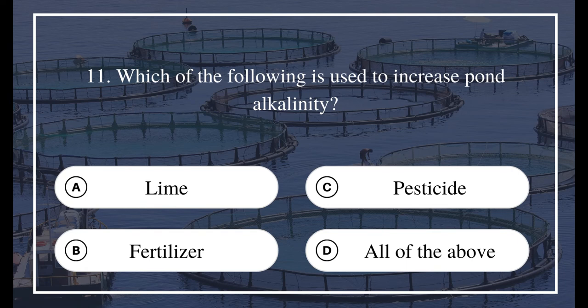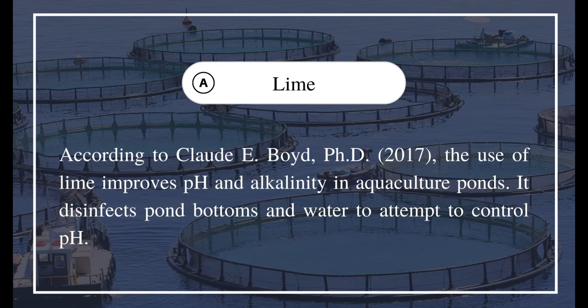Question 11: Which of the following is used to increase pond alkalinity? A) lime, B) fertilizer, C) pesticide, D) all of the above. The answer is A) lime.